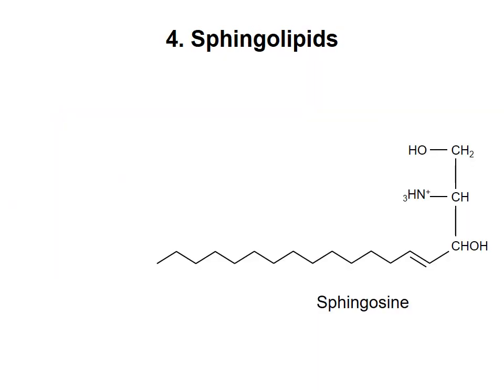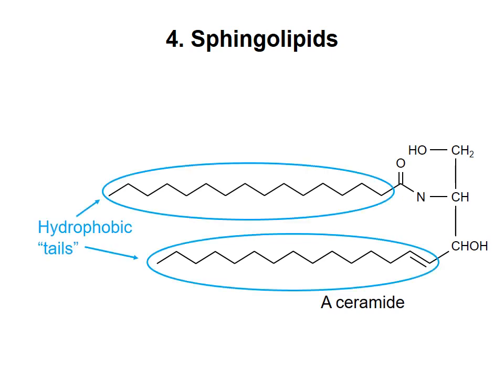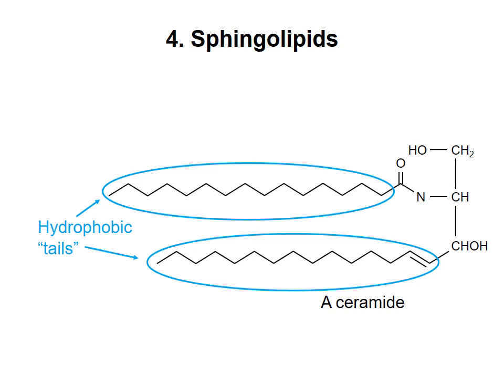Another class of amphipathic lipid is based on the molecule sphingosine, shown here. Notice that sphingosine itself has a long hydrophobic hydrocarbon chain. The nitrogen of sphingosine can be modified by a fatty acyl chain via an amide linkage to give a ceramide. A ceramide has two hydrophobic hydrocarbon chains. When the OH group of a ceramide is modified with a polar head group, such as phosphocholine, the result is a sphingomyelin. Note that the head groups can contain carbohydrates, in which case you would call the lipid a glycolipid. Sphingomyelins are amphipathic and, like glycerophospholipids, are found in membranes.